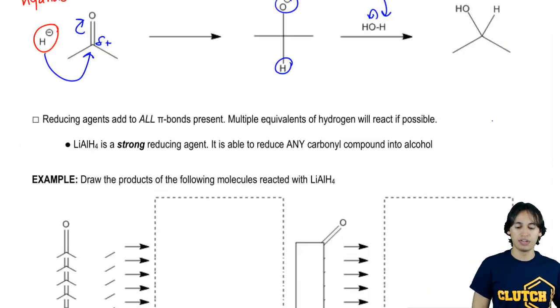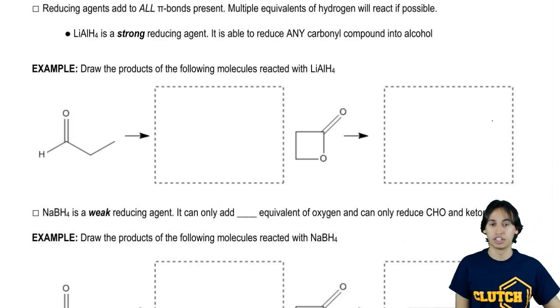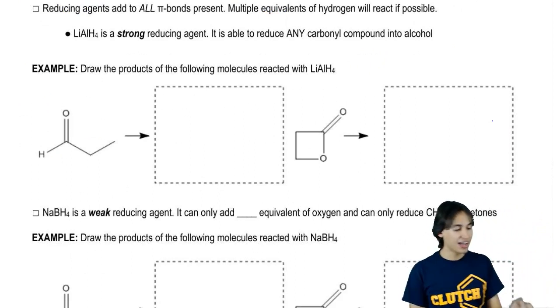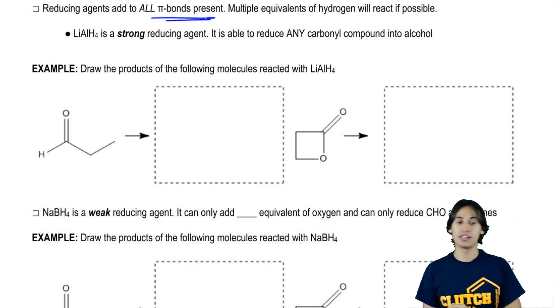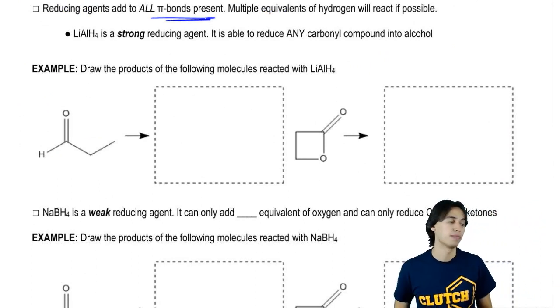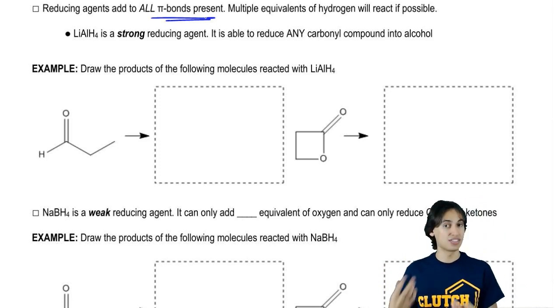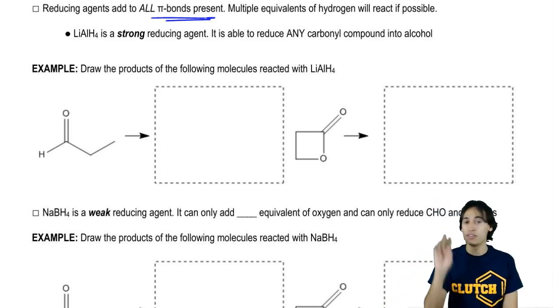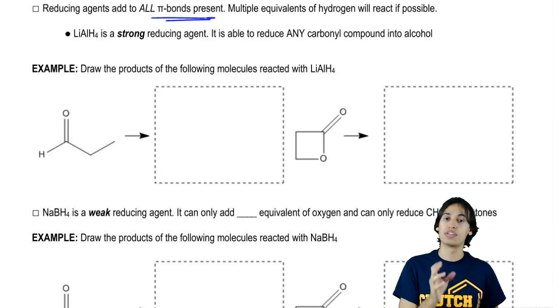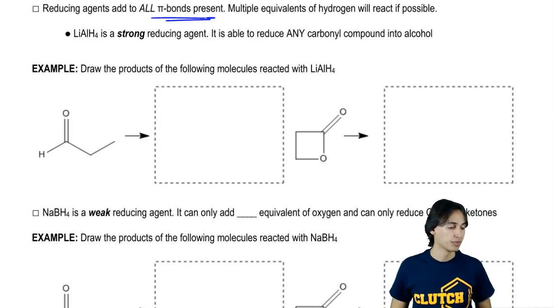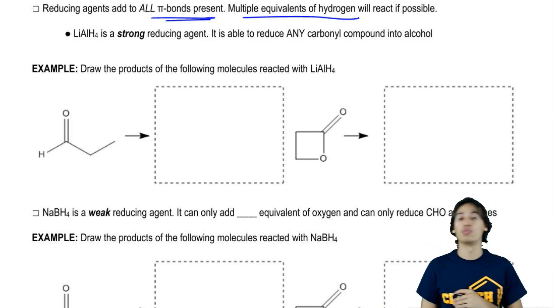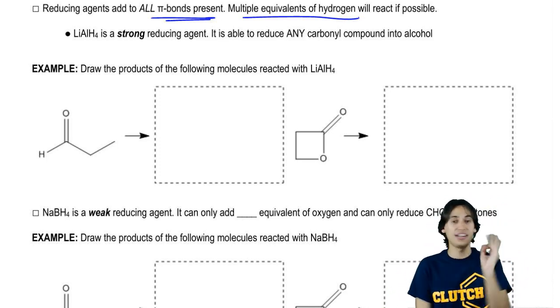Reducing agents are going to add to all of the pi bonds present. I don't need to say ten equivalents of my reducing agent in order for you to realize it's going to react ten times if it can. We're just going to blast away as many carbonyls as possible, even if I don't put how many equivalents I have. Multiple equivalents of hydrogen will react if possible. Anything that hydrogen can react with, it will.